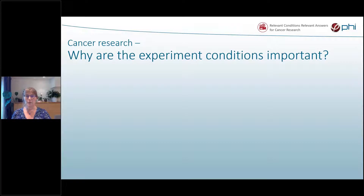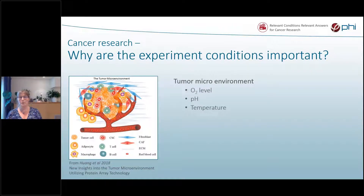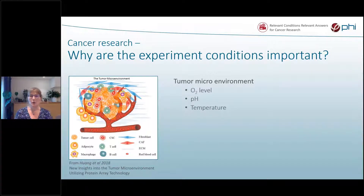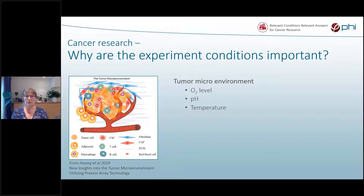So, the big question for cancer research: why are experimental conditions important? Usually you talk about the tumor microenvironment — you have the tumor cells, the non-malignant cells, and all their cell signals interacting with the tumor. You also have physiological factors like oxygen levels, pH, and temperature, which are all important for the microenvironment of the tumor.